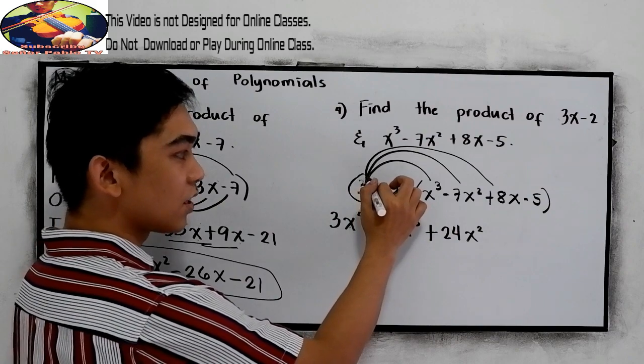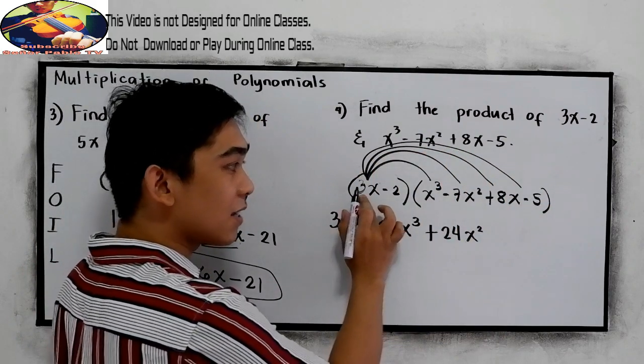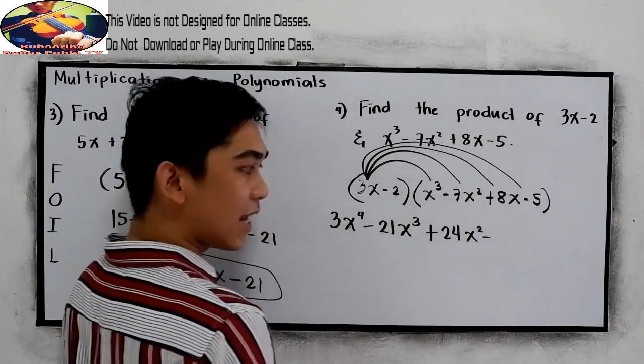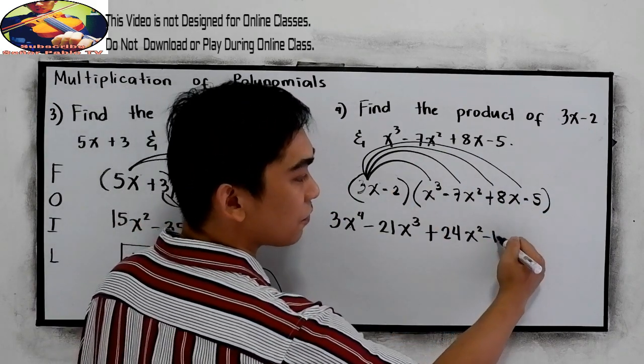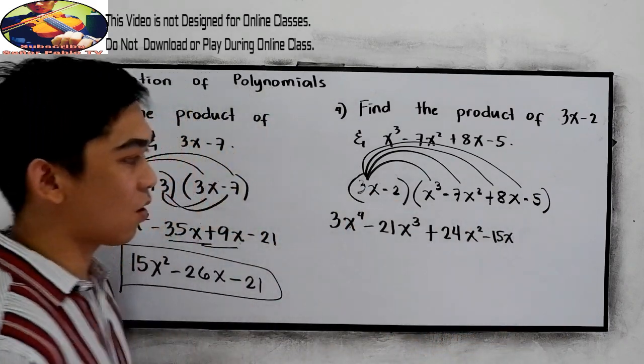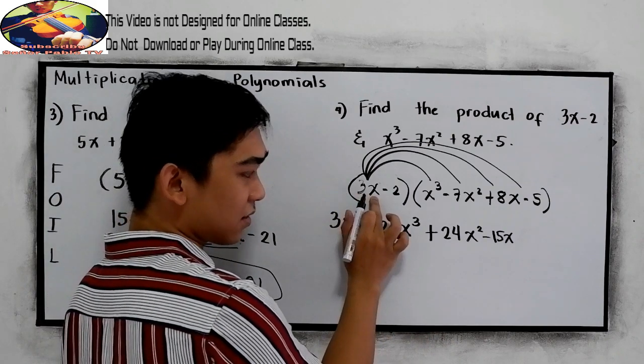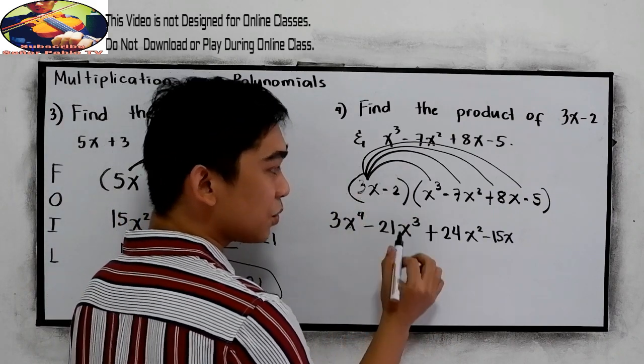And 3x times negative 5. So positive times negative, negative. 3 times 5, we have 15. And copy the x. 15x, okay. Next, we're done with 3x. Now we have negative 2.